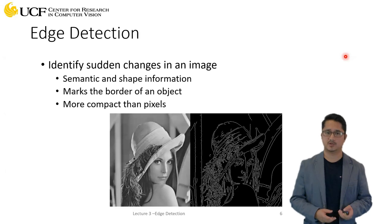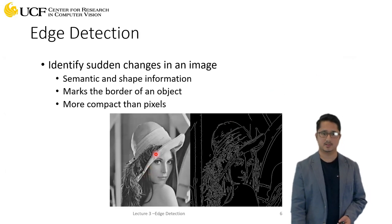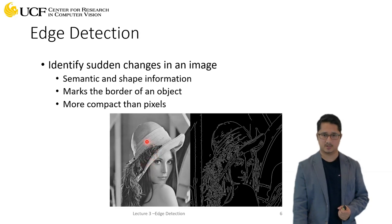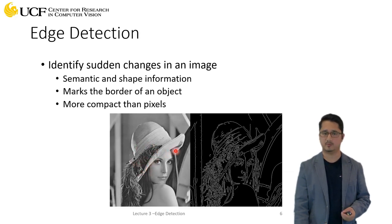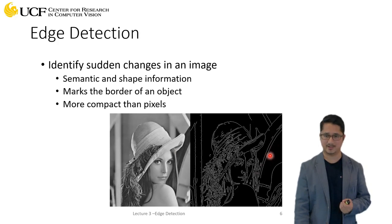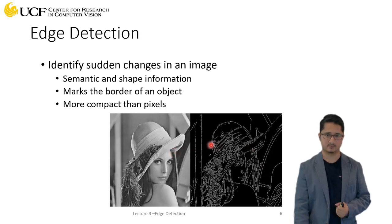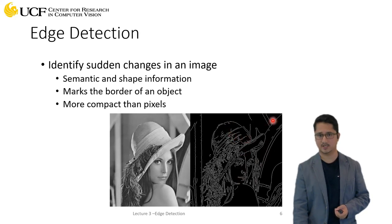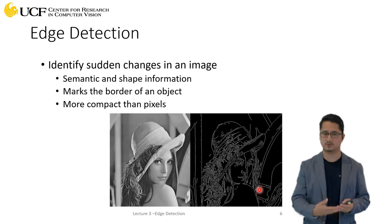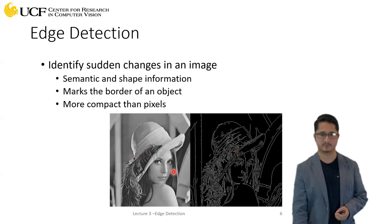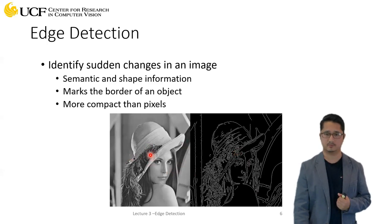Here's a simple example. This is a standard grayscale input image, and after performing edge detection we get something like this — the highly active pixel values represent edges in the image. By just looking at the edge image, you can make sense of the scene: a girl with a hat and background objects. You preserve some semantic information, though you lose texture and pixel-level detail.